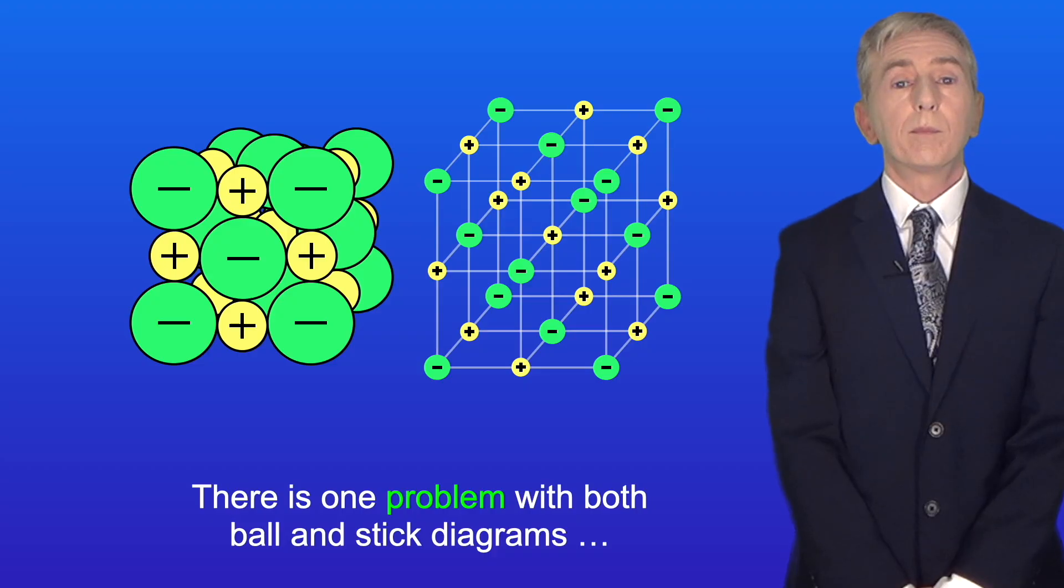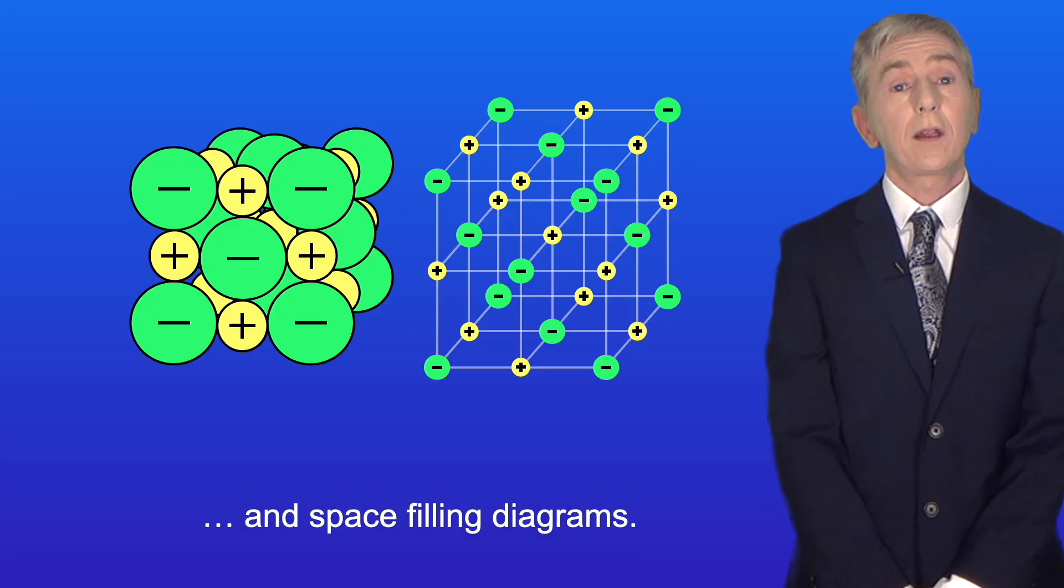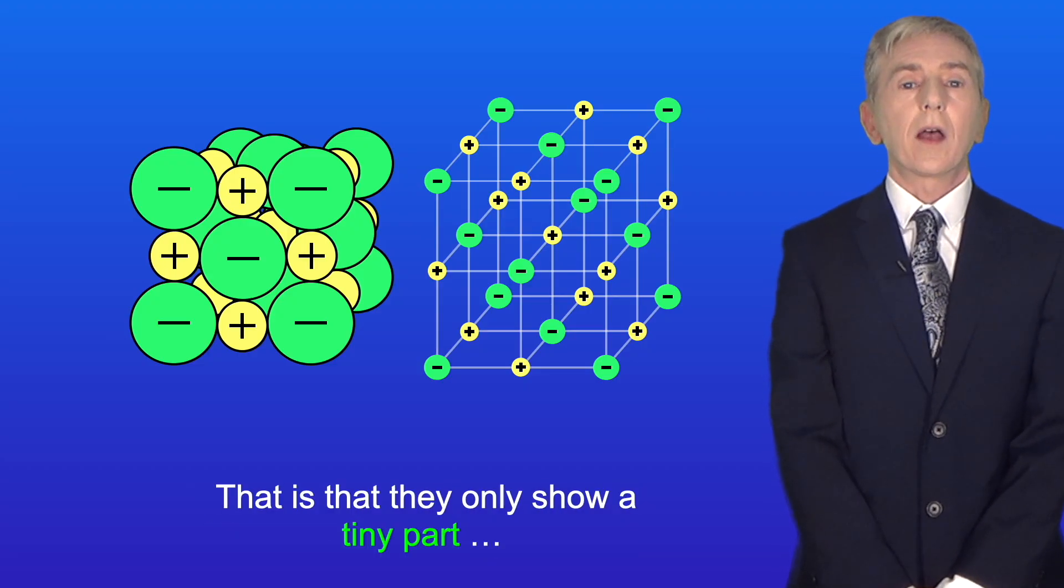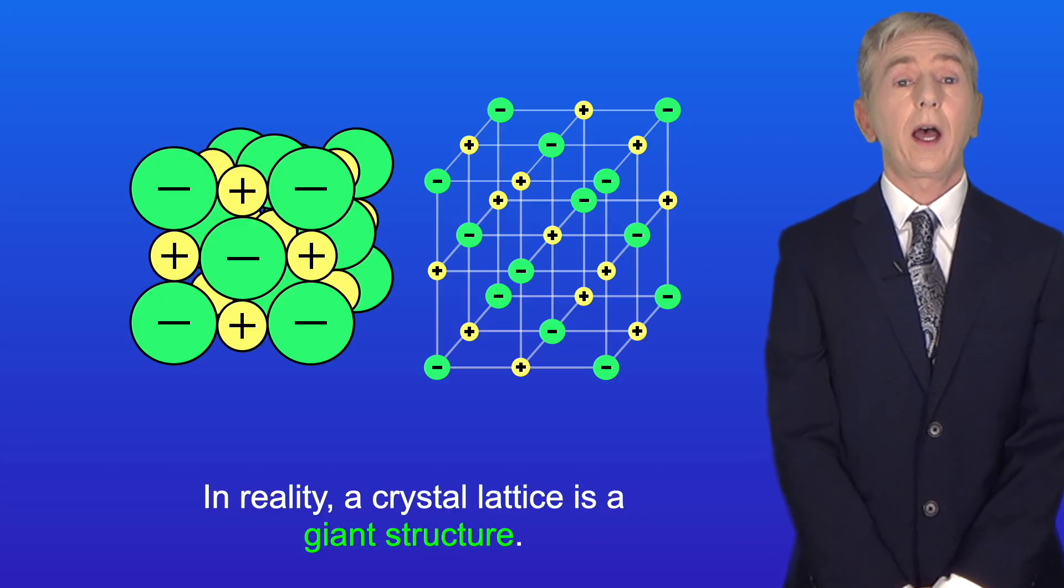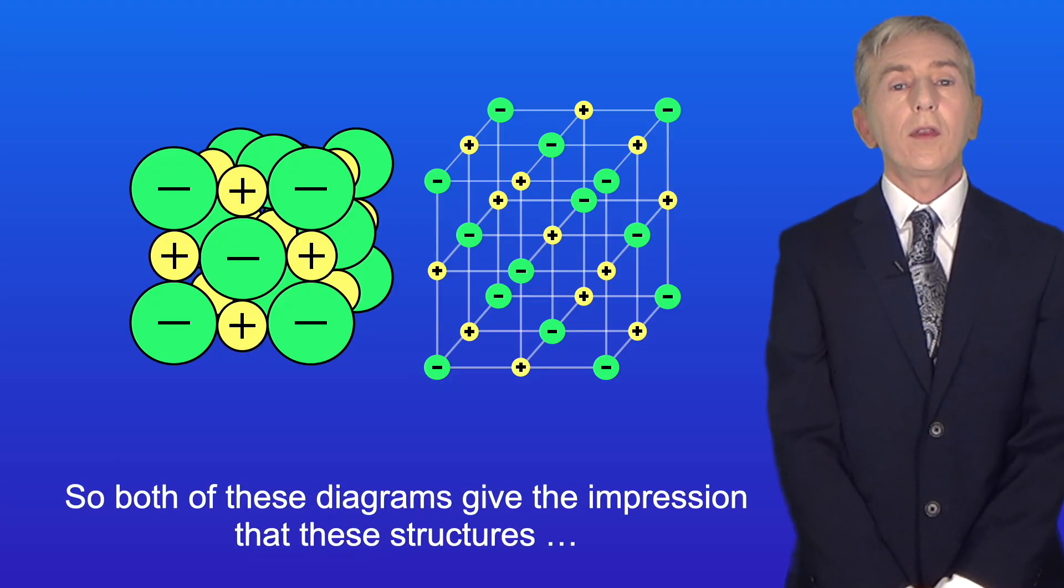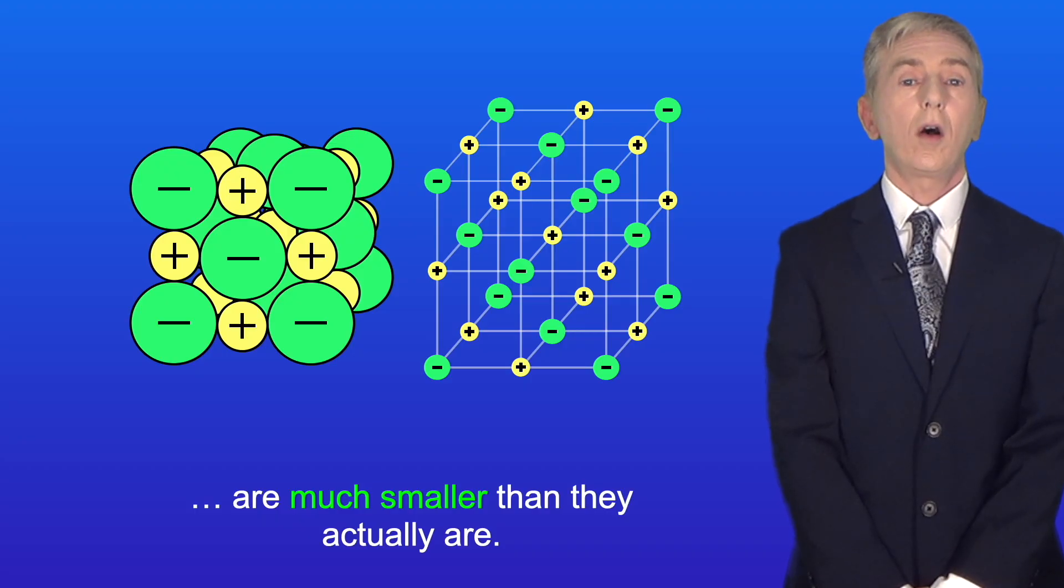Now there is one problem with both ball and stick diagrams and space filling diagrams and that is that they only show a tiny part of the giant crystal lattice. In reality a crystal lattice is a giant structure, so both of these diagrams give the impression that these structures are much smaller than they actually are.